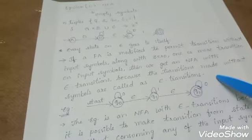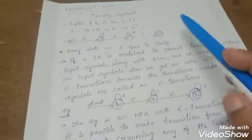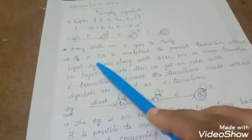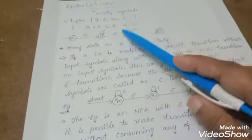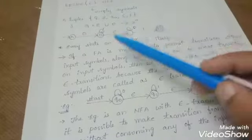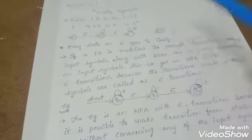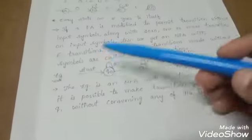If we are making any transitions, then that is called an epsilon NFA. So here we can consider an example.